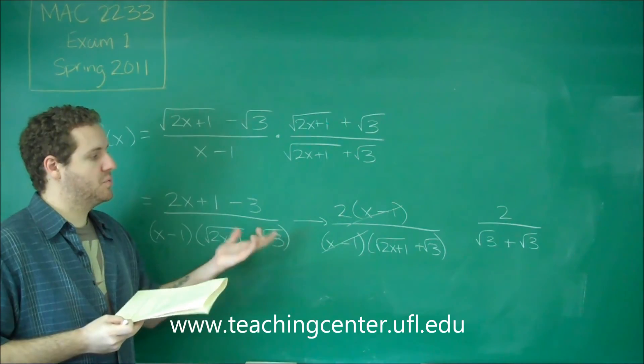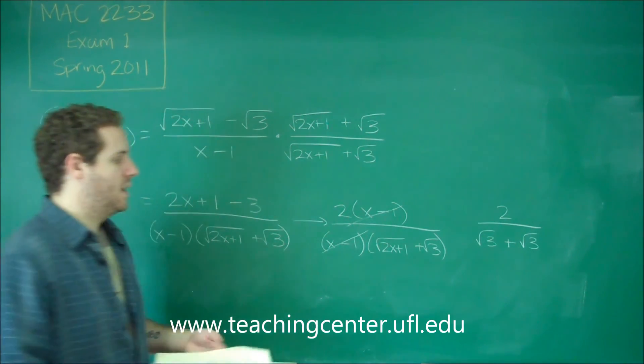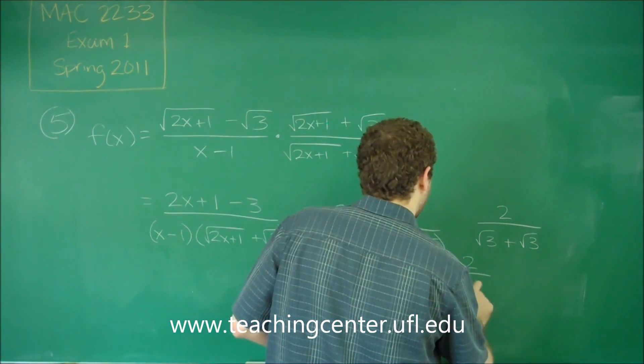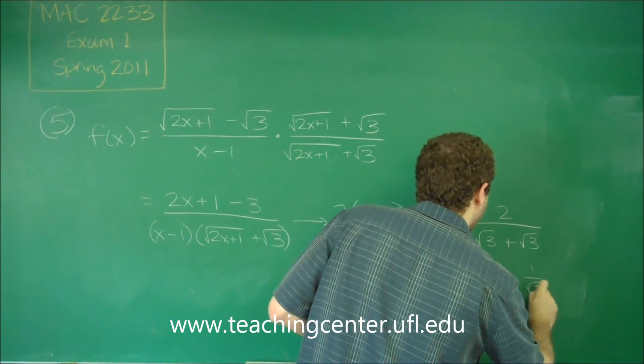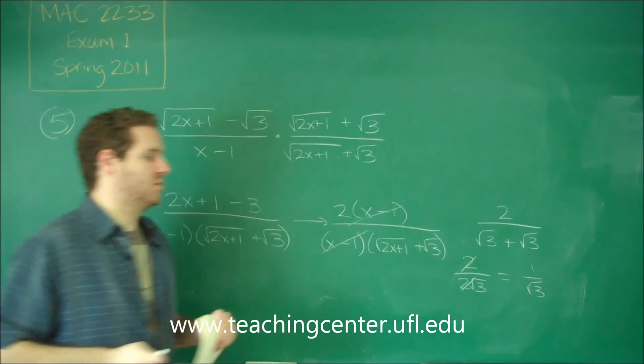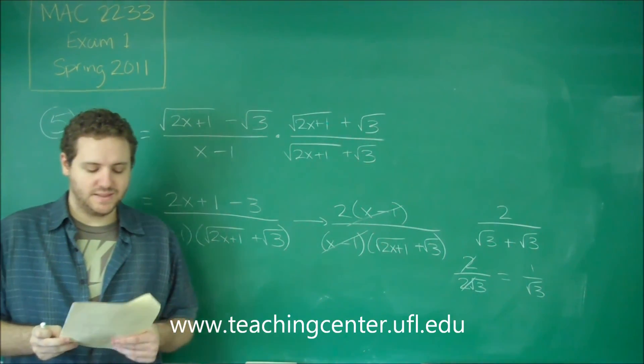So we have root 3 plus root 3, that's 2 root 3, and finally, 2 over 2 root 3 is just equal to 1 over the square root of 3. And that's answer choice E.